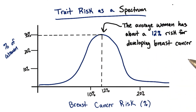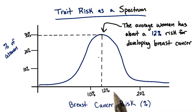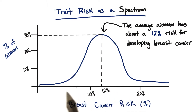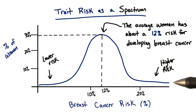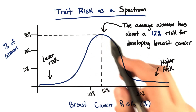This is how we can turn population data into a risk assessment for an individual person. As the bell curve indicates, most women's risks will be close to the average of 12%. And as you get farther away from the middle, fewer and fewer will have an average risk. The women down here will have a lower risk of developing breast cancer, and the women over here will have a higher risk. But as you can see, most women fall into the category near the average risk.